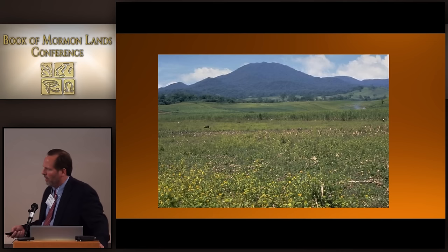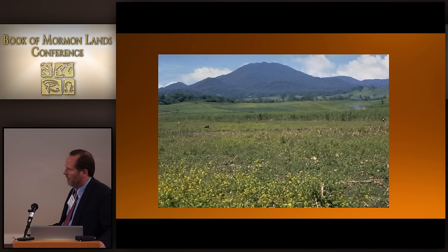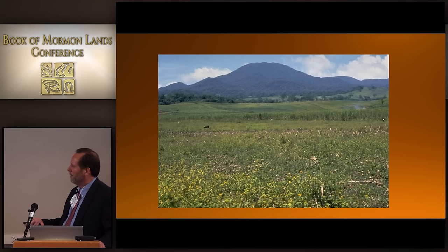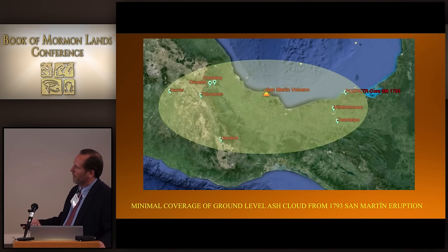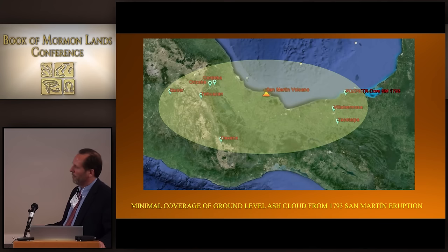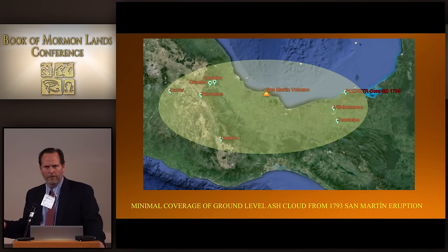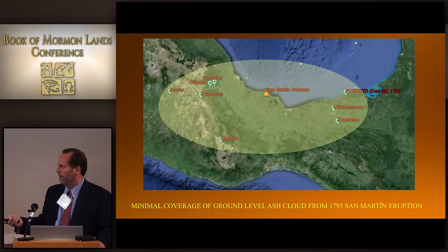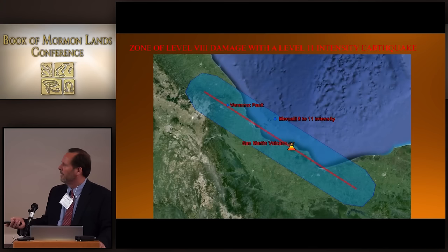I took the 1793 eruption and tracked the ash deposits based on the description by a naturalist sent from Spain. There were also core drills showing ash from that deposit in sediment. I laid it in and drew an ellipse showing the extents from that eruption — it covers a pretty broad area. It doesn't completely cover what people say is the land southward, but it covers most of the land northward. Of course, this depends on local meteorological conditions at the time that move the ash. I think that eruption shows this volcano would make sense.